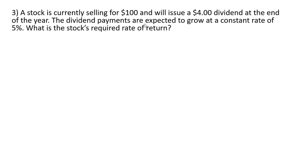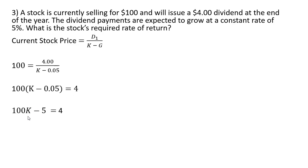Example three, a stock is currently selling for $100 and will issue a $4 dividend at the end of the year. The dividend payments are expected to grow at a constant rate of 5%. What is the stock's required return? Plugging in what we know, $100 for the price, $4 for the dividend. We're trying to solve for K, the required rate of return, and we know that the growth rate in the dividends is equal to 5%. Multiplying through by K minus 0.05, we get this result. Simplifying the left-hand side, 100 times 0.05 is just 5, and we have this result here. Adding 5 to both sides, and then dividing through by 100, the required return is 9%.